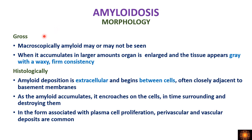Coming to the morphology of organs involved, there are certain common features. Grossly, the involved organ may be normal or increased in size. On cut section the organ appears waxy with a firm consistency. Microscopically, amyloid deposition occurs in the extracellular region — that is, in between the cells.